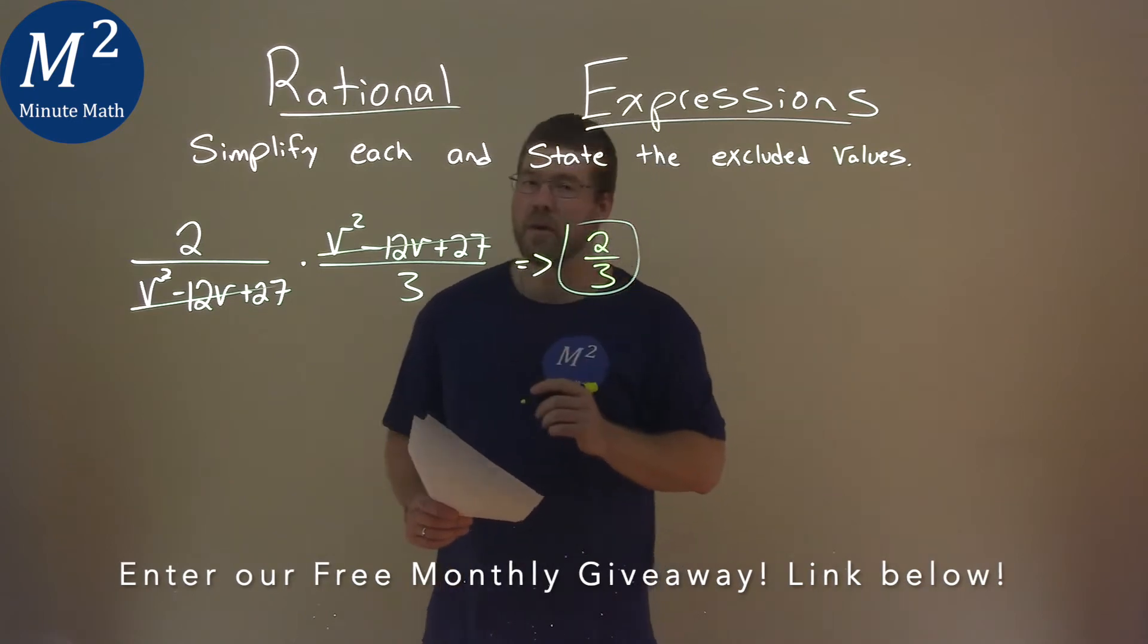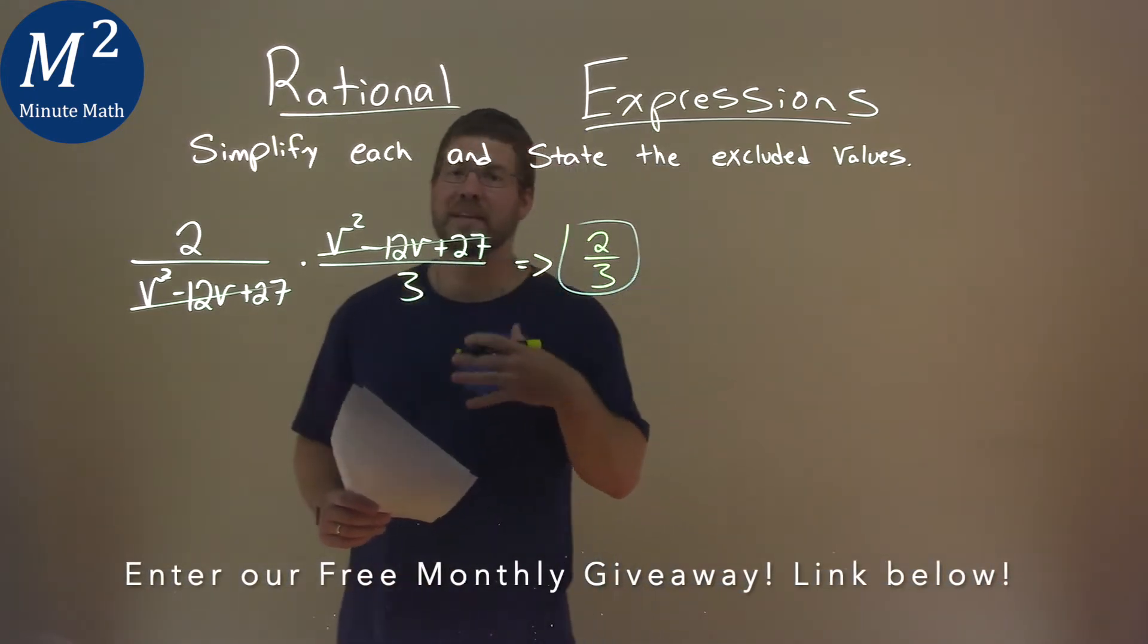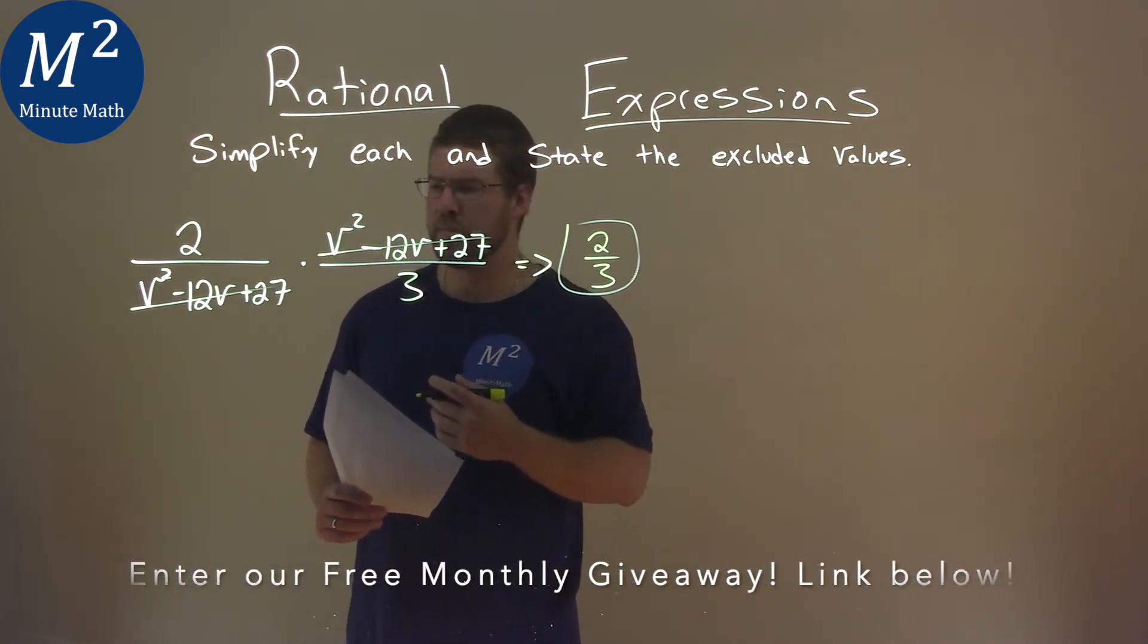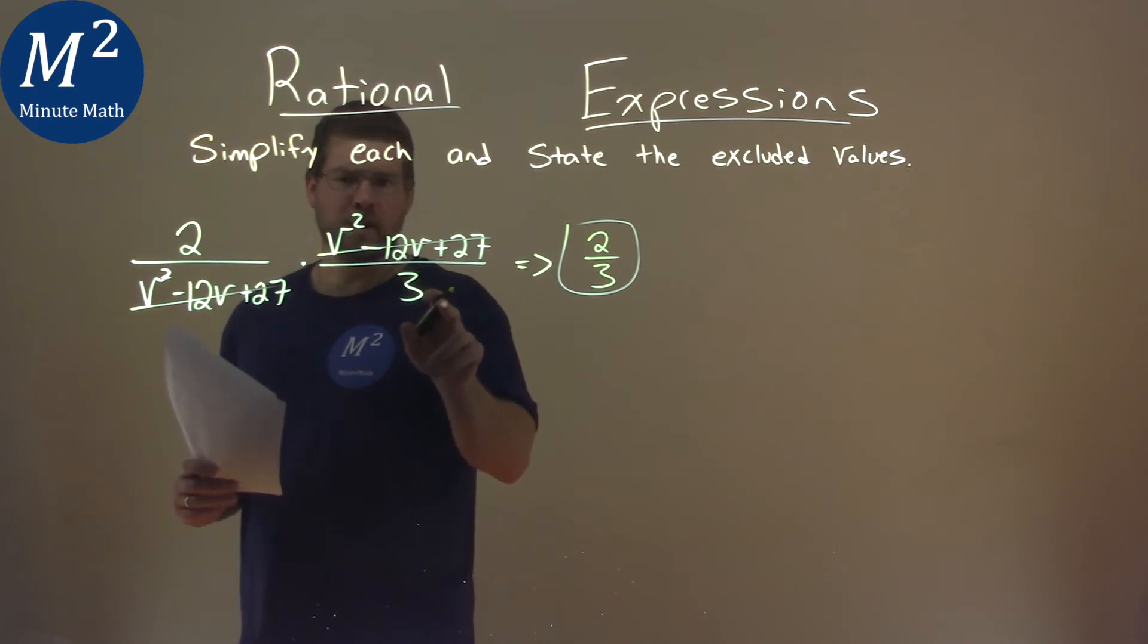Now the hard part here is our excluded values. That's when our denominator is equal to 0, because we can't divide by 0. So in doing that here, there's no variable with that 3, so we're fine.